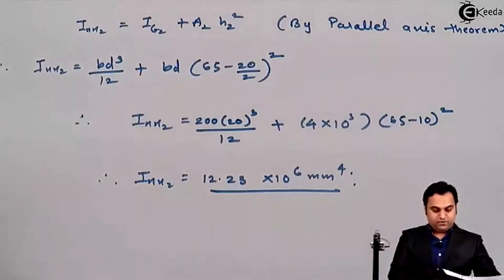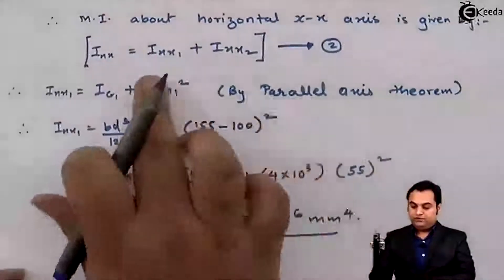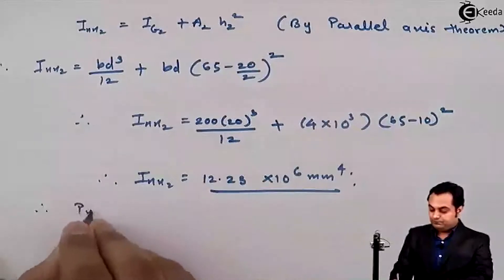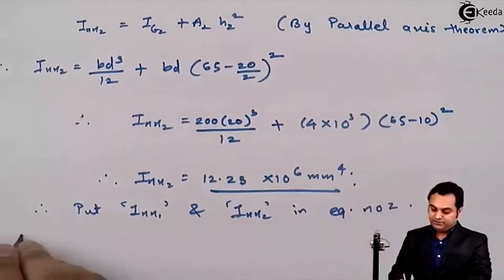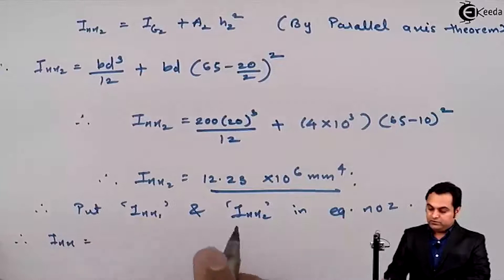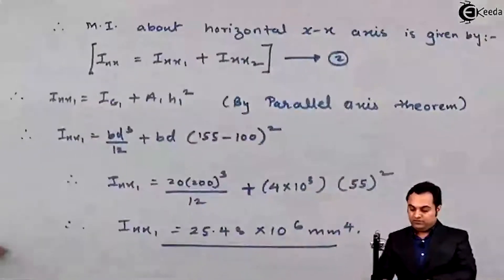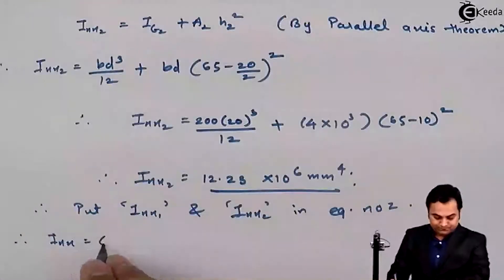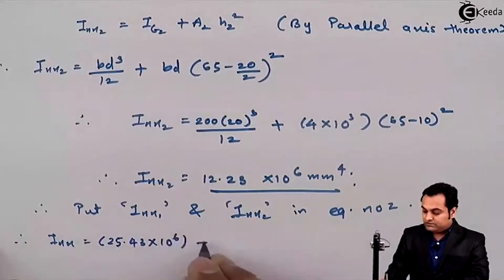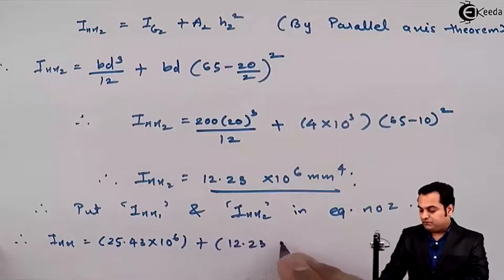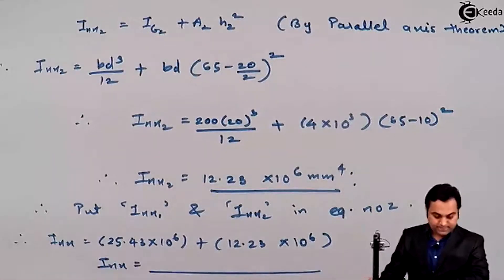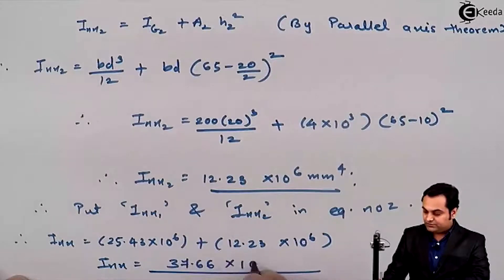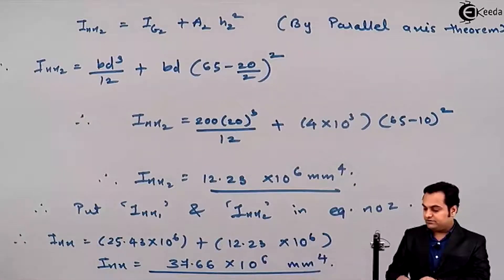Putting IXX1 and IXX2 into equation number 2: IXX = 25.43 × 10⁶ + 12.23 × 10⁶. Therefore, IXX = 37.66 × 10⁶ mm⁴. This is the first answer.